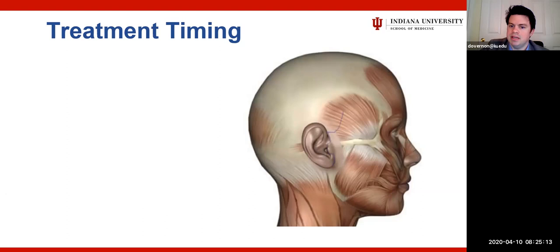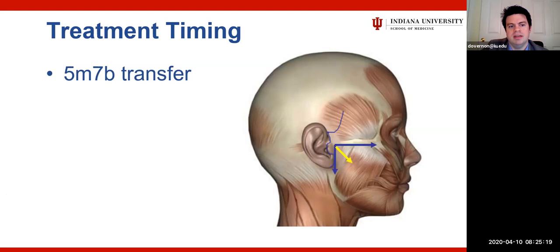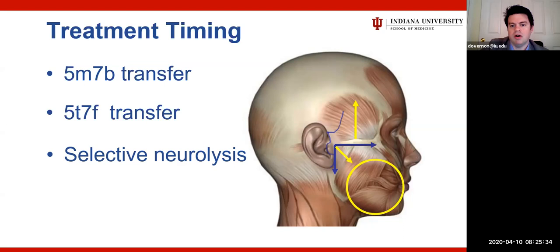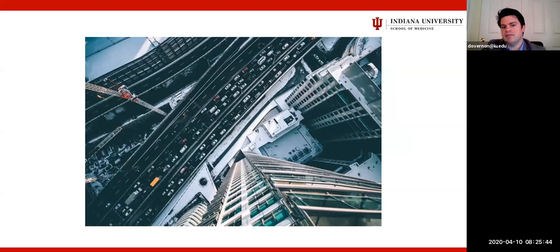From an extended facelift approach, we now have multiple options for these patients through a single incision: a masseter-to-buccal (5-7) transfer if needed, a deep temporal branch-to-frontal branch (5-7 equivalent) transfer, and a selective neurolysis — potentially three procedures through one facelift approach.